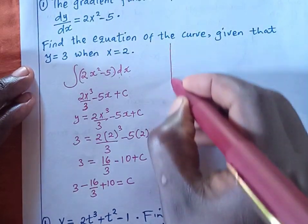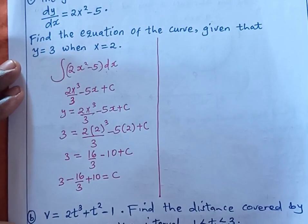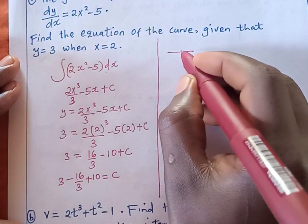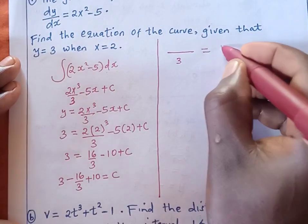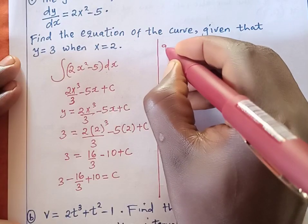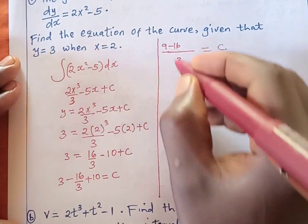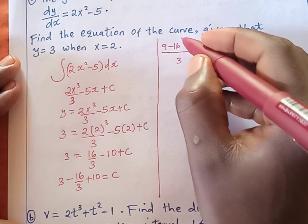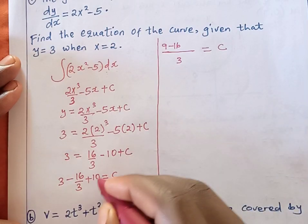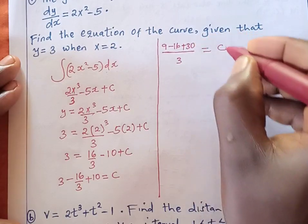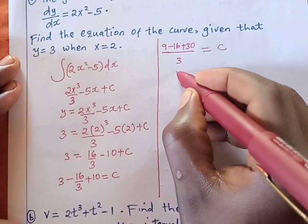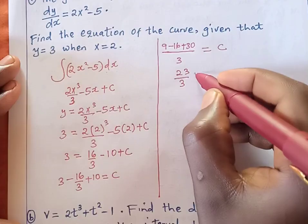Let us work out the simple mathematics by finding the LCM. The LCM on the left-hand side is 3. One goes into 3 three times, so 3 times 3 gives 9; then minus 16; then 3 times 10 gives positive 30. So: 9 minus 16 gives negative 7, plus 30 gives positive 23. Divide by 3. This is our value of c: 23 over 3.